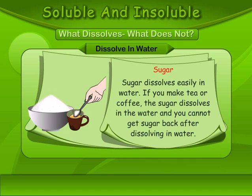Sugar: Sugar dissolves easily in water. If you make tea or coffee, the sugar dissolves in the water and you cannot get the sugar back after dissolving it in water.